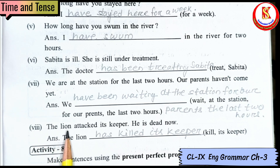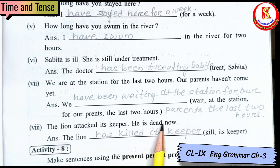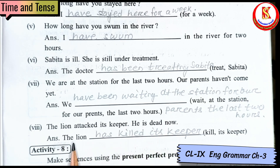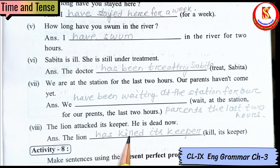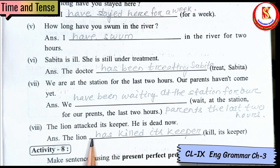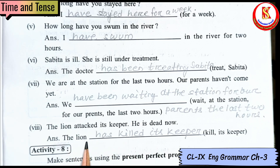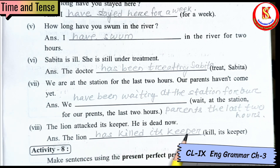'Sabita is ill and still under treatment' — the doctor has been treating her, so present perfect progressive: 'The doctor has been treating Sabita.' 'We are at the station for the last two hours, our parents have not come yet' — 'We have been waiting at the station for our parents for the last two hours.' 'The lion attacked its keeper and he is dead now' — 'The lion has killed its keeper.'